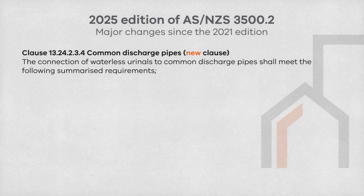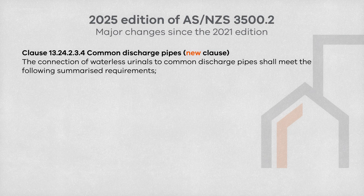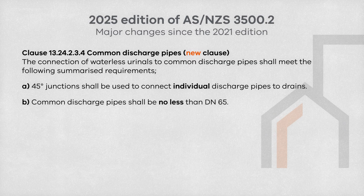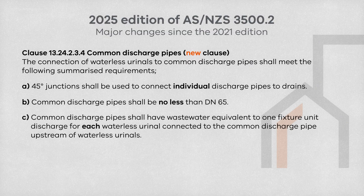A new clause has been added to the standard outlining the connection requirements that waterless urinals must comply with when connecting to common discharge pipes. There are five new requirements. First, 45-degree junctions shall be used to connect individual discharge pipes to drains. Second, common discharge pipes shall be no less than 65mm. Third, common discharge pipes shall have wastewater equivalent to one fixture unit discharge for each waterless urinal connected upstream.